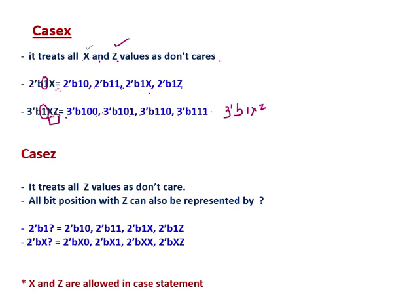Then in case of casez, it reads all z values as don't care. All bit positions with z can also be represented by a question mark. So if it is written 2v1?, this question mark can be 0, it can be 1, it can be x, or it can be z.